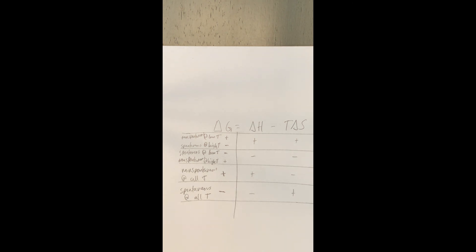Whether you want to memorize this or not, just be able to rationalize it in your mind — how the sign on delta G can change based on temperature, but also based on the signs of delta H and delta S. You'll look at practice questions later, considering conditions where it's spontaneous at all temperatures, non-spontaneous at all temperatures, or where high and low temperature affects spontaneity. Think back to this chart and the signs on delta H and delta S.